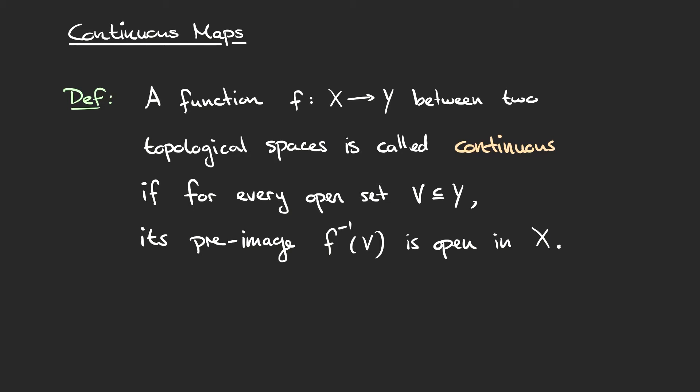If we have two topological spaces X and Y, then a function f between them is called continuous if for every open set V in the codomain Y, its pre-image — f inverse of V — is open in X. More succinctly, a function is continuous if the pre-image of every open set in the codomain is open in the domain. As a reminder, the pre-image is just the set of all points in X that are mapped to the set V.